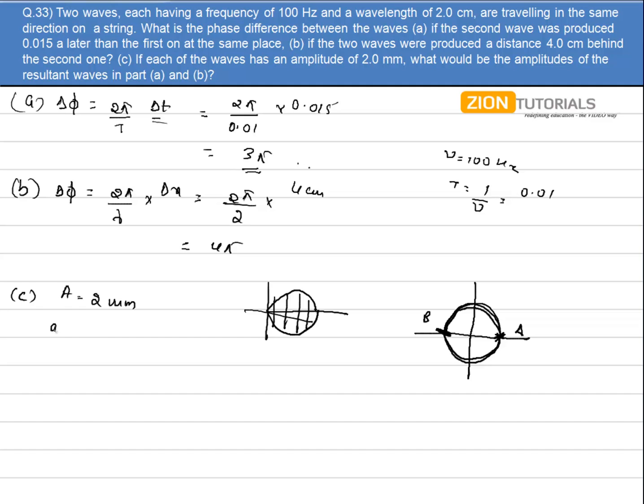So in part a, net amplitude is 0. For 4π, in the 4π case, this is my complete 2π, another 4π, so the particle is in phase with the earlier particle. If one wave is like this, the another wave will also be like this, and the net amplitude will be doubled. So net amplitude will be equal to 4 mm. That is the answer.